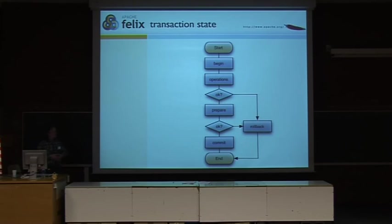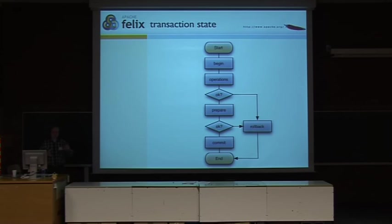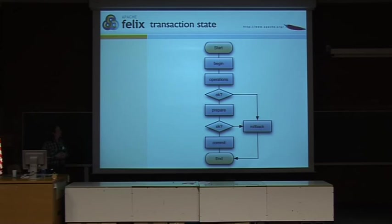Just a brief look at how this transactional mechanism works. It's not really rocket science — it's just like a two-phase commit. If you install a deployment package, you start at the beginning: everybody gets a chance to initialize. As soon as that works out, you go into a prepare phase, where everybody is asked if they can prepare the change. If that works okay, then you get the actual commit, and then everybody should commit what they've been doing. If anything anywhere goes wrong, you go into a rollback and everything gets rolled back to its original state, and finally this transaction ends.